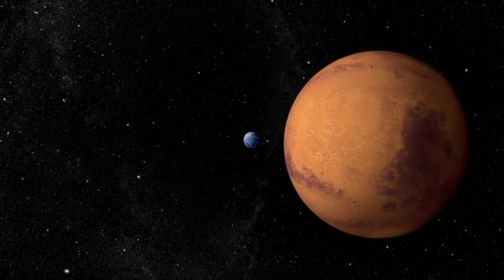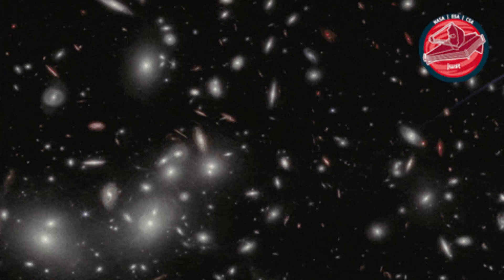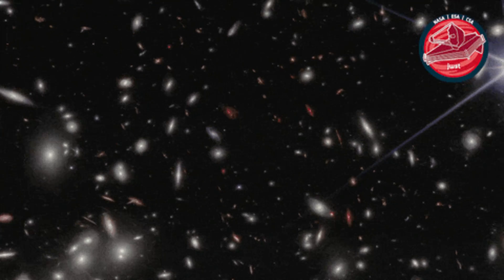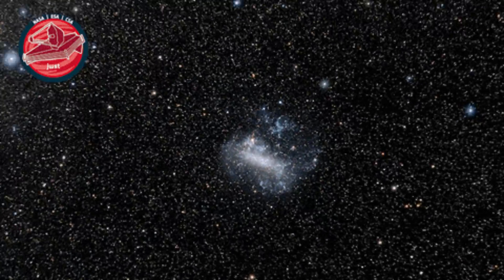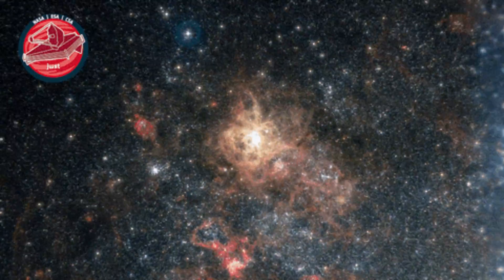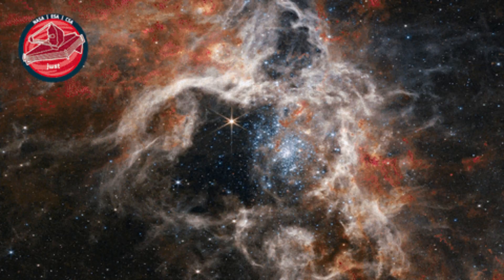Gupta shows this neatly accounts for the surprisingly small sizes of galaxies observed by the James Webb Space Telescope in the very distant young universe. This resolves a puzzle regarding the standard model of cosmology.